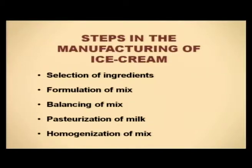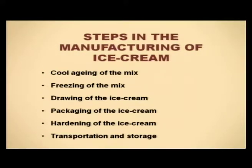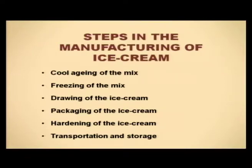What are the processing steps in the manufacturing of ice cream? These are: selection of ingredients, formulation of the mix, balancing of the mix, pasteurization of the mix, homogenization of the mix, cool aging of the mix, freezing of the mix, drawing of the ice cream from the freezer once it has frozen, packaging of the ice cream, and then transportation and storage. These are the different steps which go into the manufacturing of ice cream.